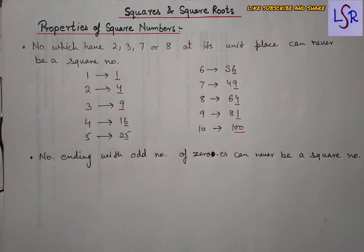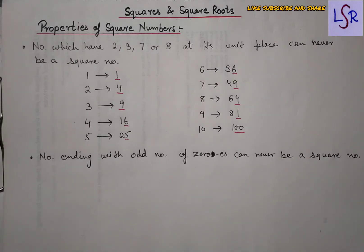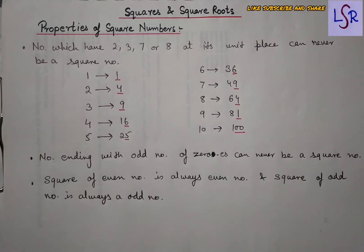This means if the number of zeros at the end is odd, like three zeros in 1000, it can't be a square number. But 100 and 10,000 can be perfect squares since they have an even number of zeros at the last.